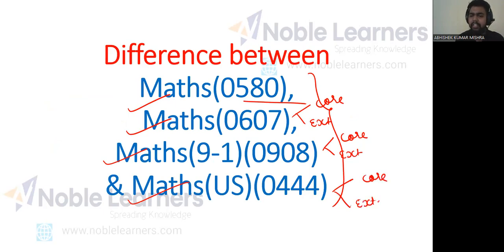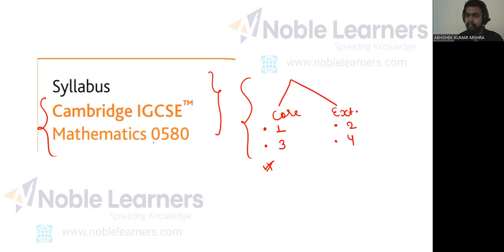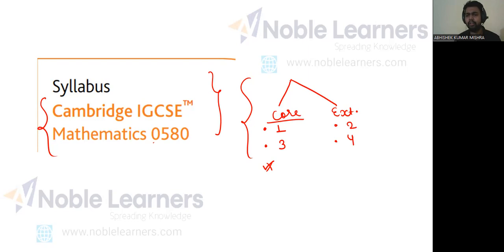Core is taken by students who are not very efficient or not very good in Mathematics, or who do not want to pursue Mathematics in future — those who do not see their career in a profession with a mathematical background. They just want to know the basics of Mathematics. Extended is opted by students who are able, efficient, and proficient, and who are actually pursuing their future in Mathematics.